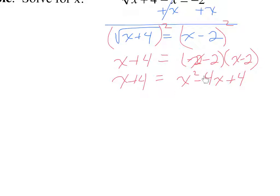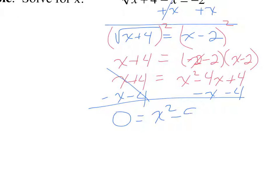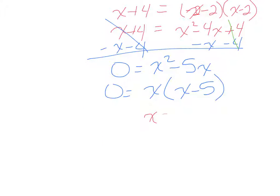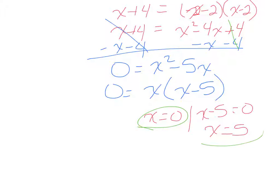This is now a quadratic equation, which we learned to solve in the factoring chapter. With x squared present, we move all terms to one side to equal zero. Subtracting x and subtracting 4 from both sides gives x squared minus 5x equals 0. We factor out the GCF of x to get x times x minus 5 equals 0. Setting each factor to zero gives two solutions: x equals 0 and x equals 5.